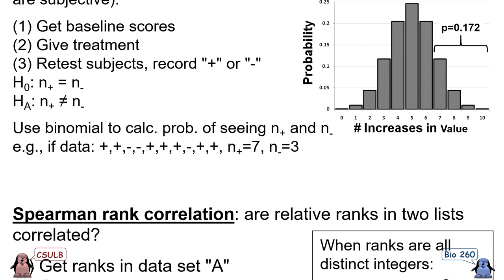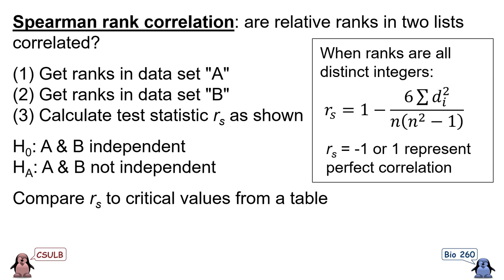Spearman rank correlation is the correlation method which uses relative ranks instead of numerical values. It's used for situations in which individuals are present in two datasets that can be ranked. The question it asks is whether the ranks of the individuals in each of the two different lists are correlated or not. First, we get the ranks of each individual in dataset A. Second, we get the ranks of each individual in dataset B. Third, assuming all ranks are distinct, we calculate the test statistic. The d_i numbers indicate the difference in ranks for individual i.